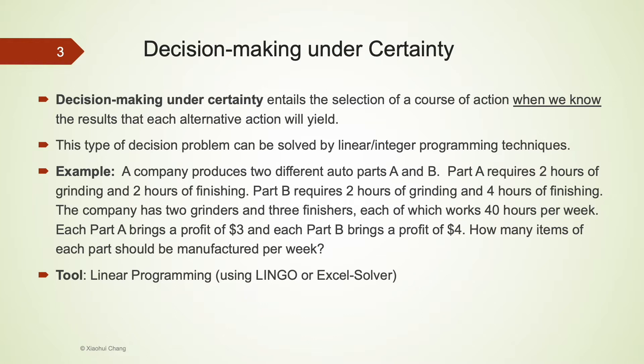In contrast, if we do know the outcome of each alternative action, we are facing a decision-making problem under certainty. For example, when a company can produce two different types of auto products, A and B, this company tries to decide how many A and B to produce. This is a decision-making problem with certainty, as the company has all the information regarding producing A and B.